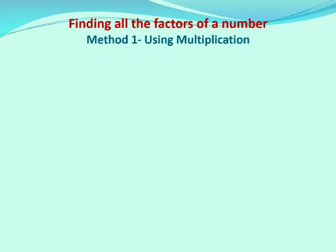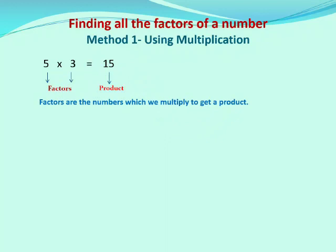Before that, let us recall what are factors. Look at this example: 5 into 3 is equal to 15. When we multiply 5 and 3 we get the product 15. Here, 5 and 3 are the numbers which we multiplied, so we can say that 5 and 3 are factors of 15, and 15 is the product of 5 and 3. So, factors are the numbers which we multiply to get a product.